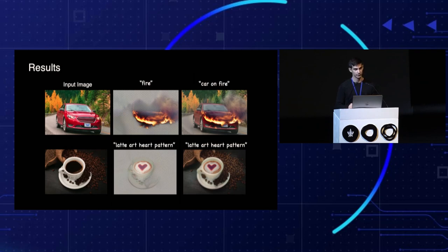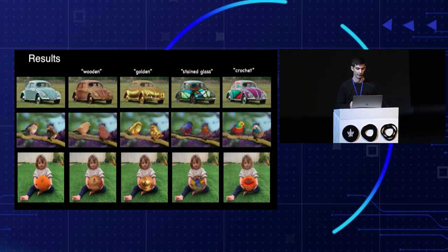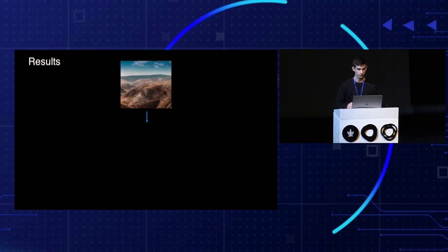Let's see some more results. Text2Live synthesizes complex semi-transparent effects — for example, notice the fire effect and the realistic composition with the car. Text2Live can also change textures or materials of objects in a semantically aware manner. It localizes the object of interest without relying on a user-provided mask and preserves the original content. We can also edit the image in a more global manner.